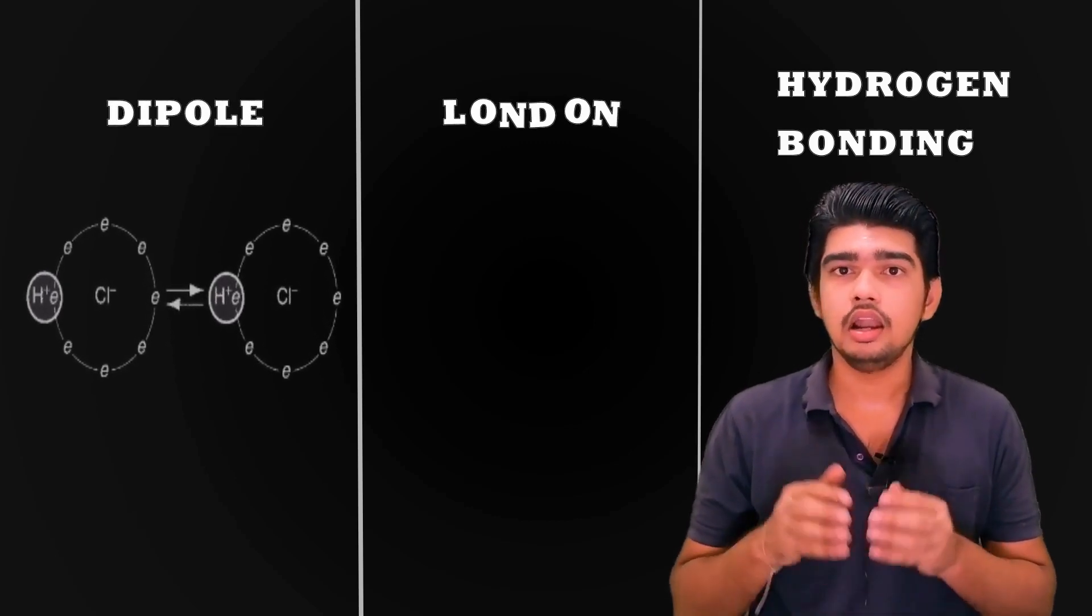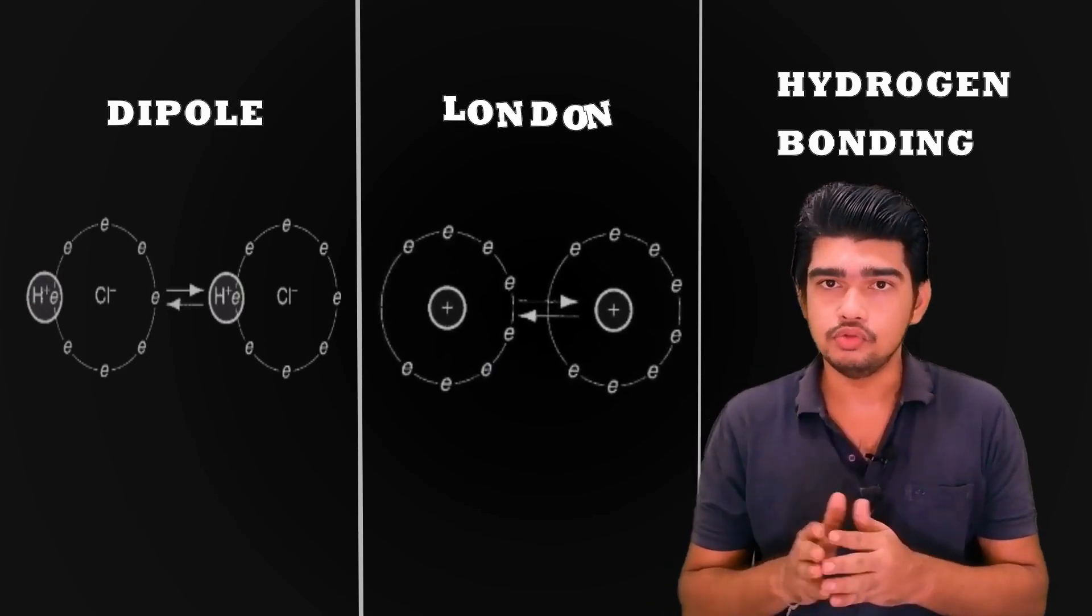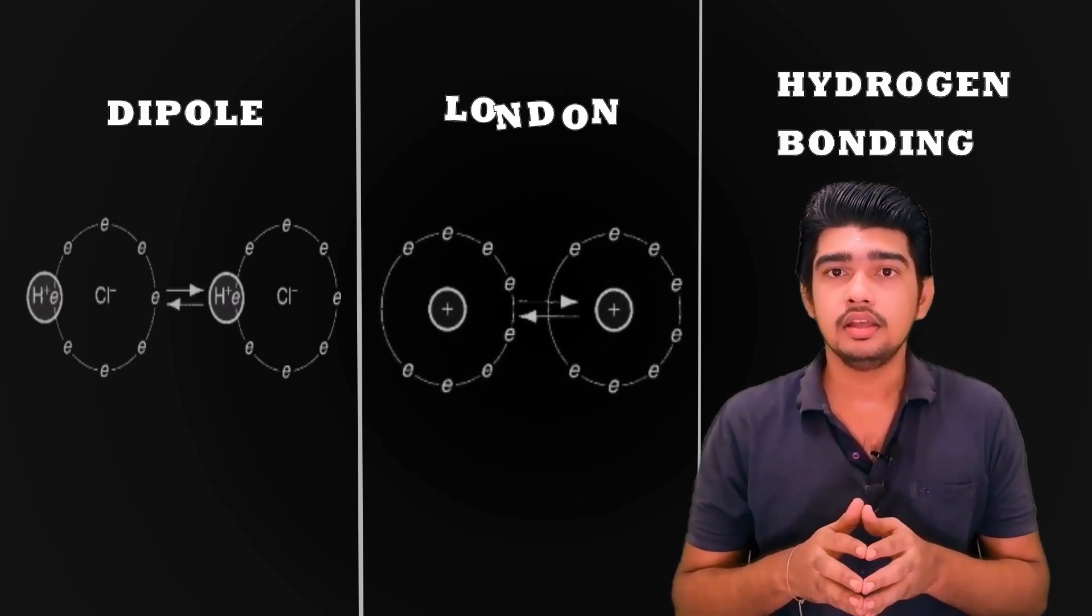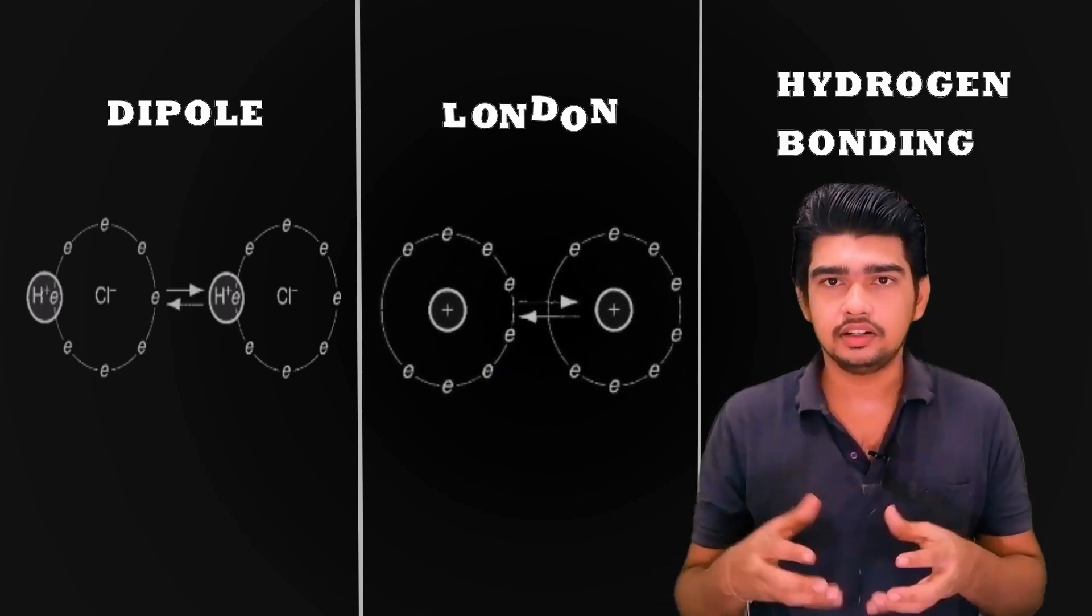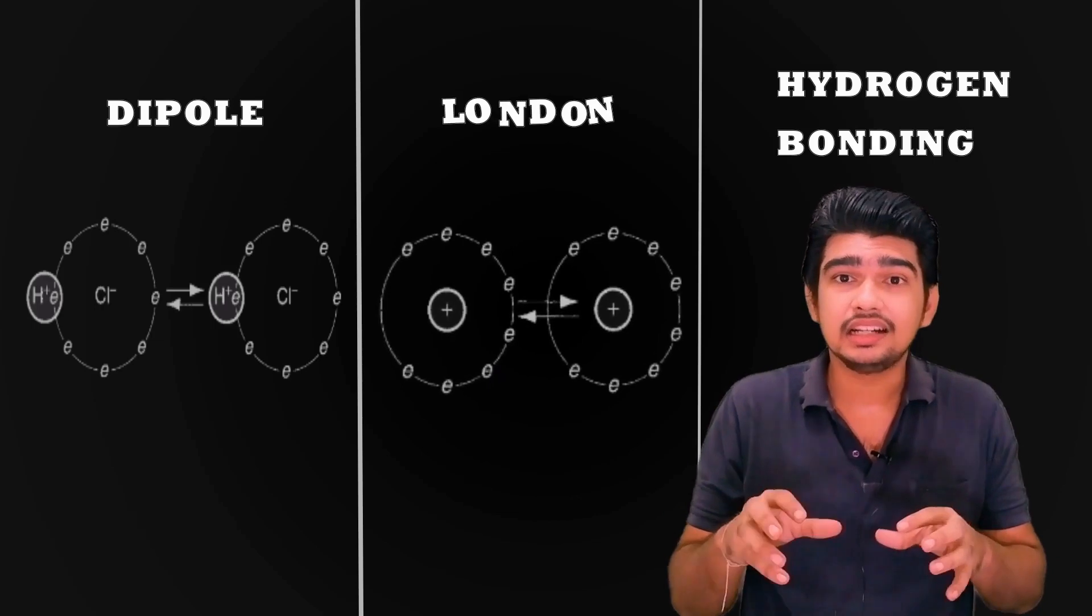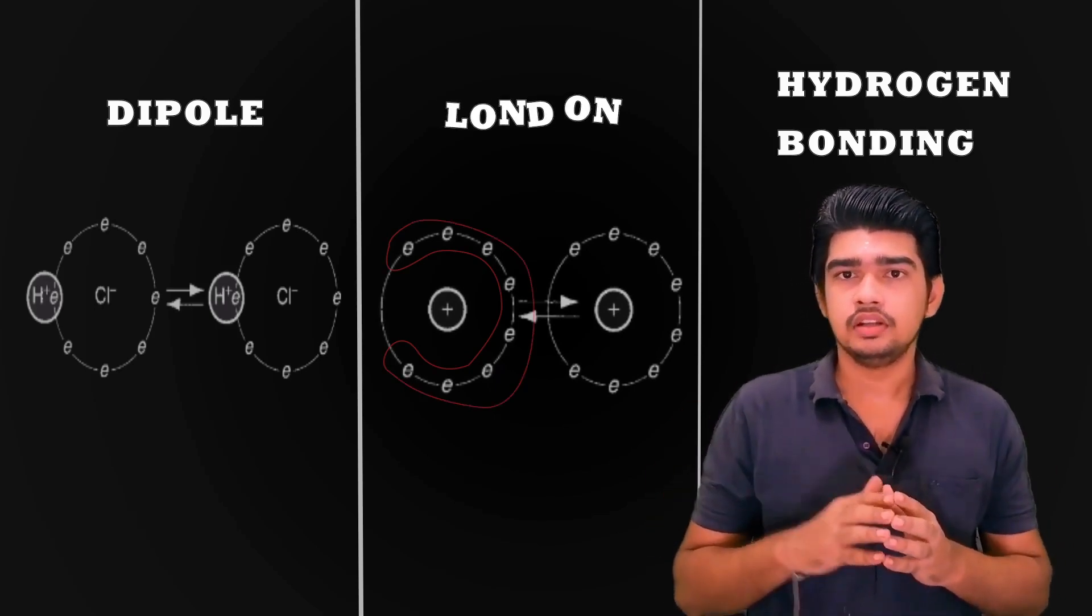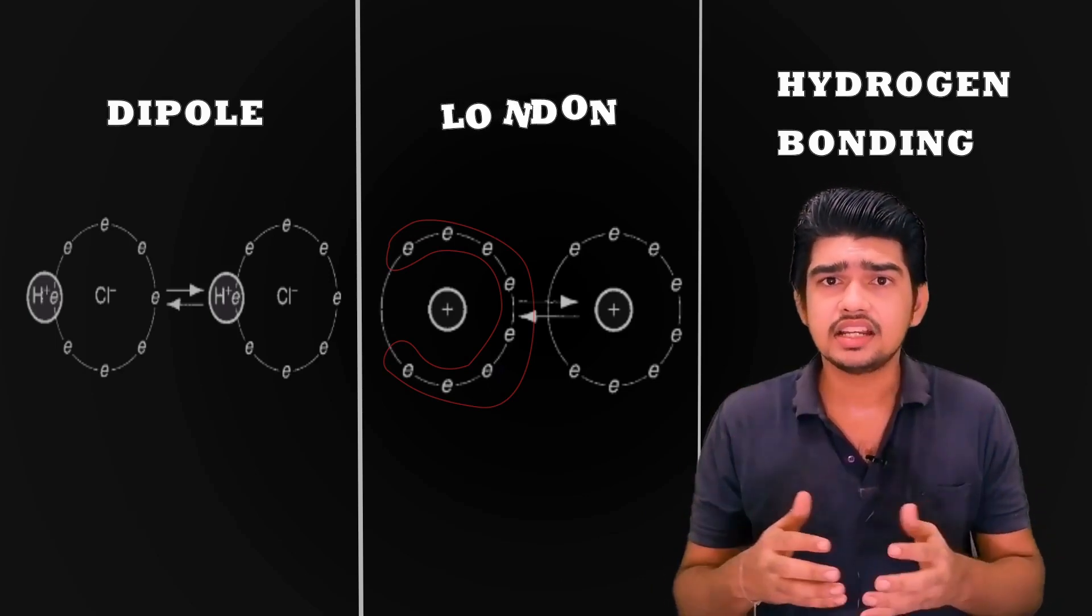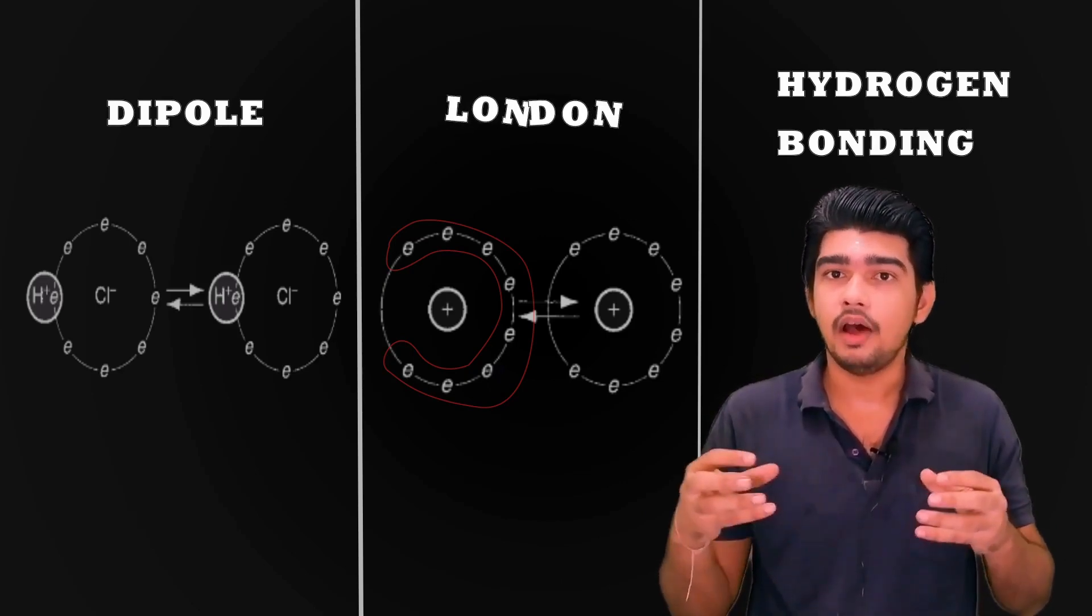London forces involve attractive forces between non-polar molecules. That is, the atoms in the molecule do not form dipoles. However, owing to the rapid motion of electrons in orbit around the molecules, temporary dipoles form when more electrons happen to be on one side of the molecule than on the other side. You can see it in the image. These instantaneous dipoles provide a force of attraction between molecules, but this attraction is weaker than atom-to-atom attraction.